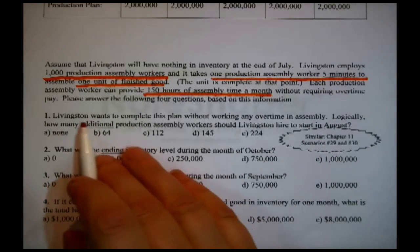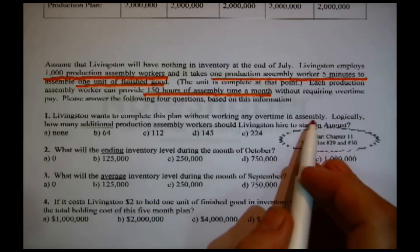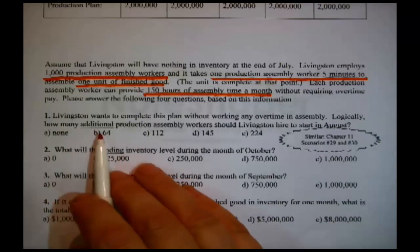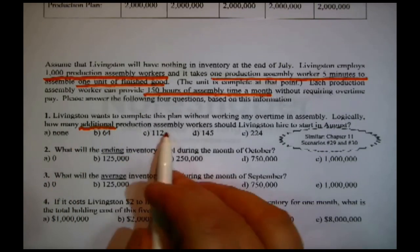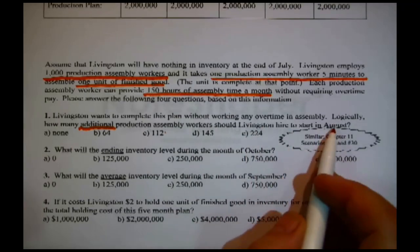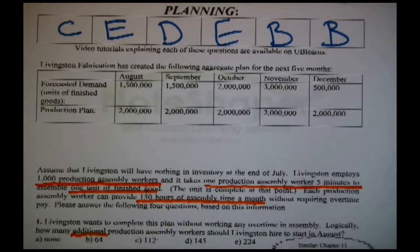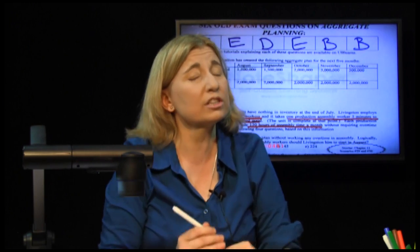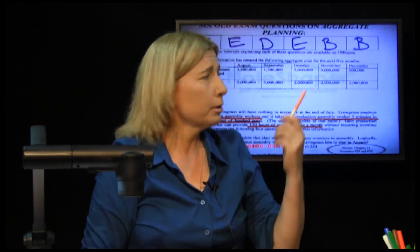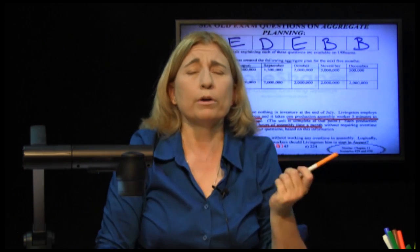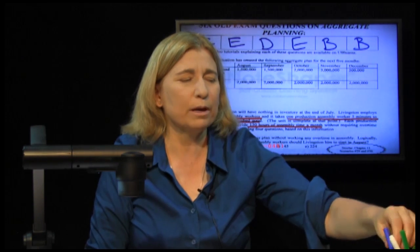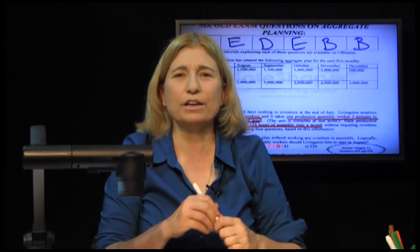First question: Livingston wants to complete this plan without working any overtime in assembly. How many additional production assembly workers should Livingston hire at the start of August? It's just logic — not a particular formula. They're proposing to produce 2 million units a month. We have information about how productive a particular person is, and we know they have 1,000 people.